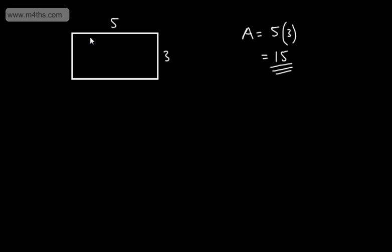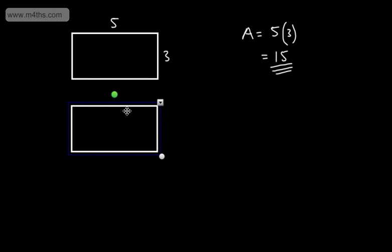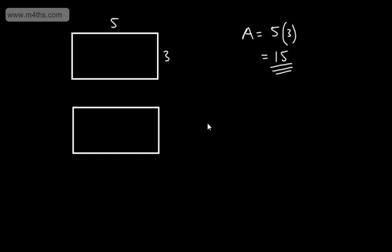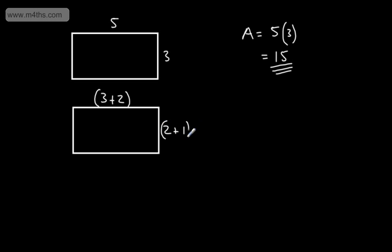Now I'm going to take the same rectangle and split these lengths up. Instead of 5, I'll have 3 plus 2, and instead of 3, I'll have 2 plus 1. So this length is 3 plus 2, and this one is 2 plus 1 — these add up to give the same values.